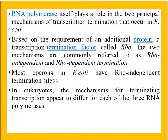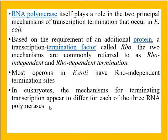Most of the operons studied in E. coli are rho-independent — meaning most possess rho-independent termination sites. In eukaryotes, the mechanisms for termination of transcription appear different for the different types of RNA polymerases present. We will deal with that later. For now, we focus on prokaryotic termination.